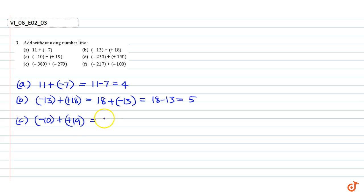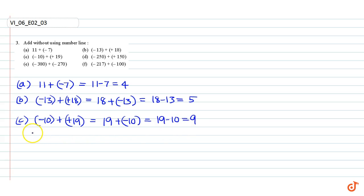Part c: minus 10 plus 19. Rearranging the numbers we get 19 plus minus 10, which is equal to 19 minus 10, equal to 9.